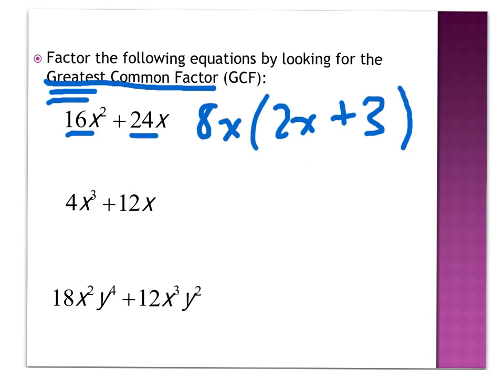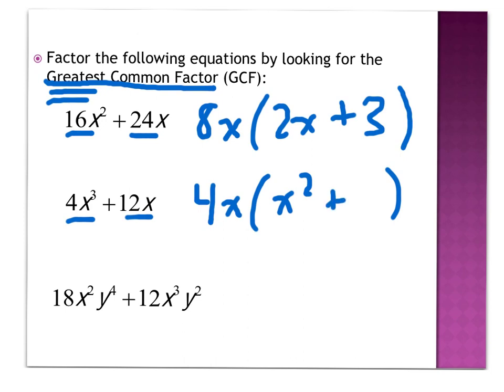Let's take a look at another problem: 4x³ + 12x. The greatest common factor here is 4x — that's what I can divide both terms by. Then I see what's left inside: 4x³ divided by 4x is x², and 12x divided by 4x is 3. So the factored form is 4x(x² + 3).